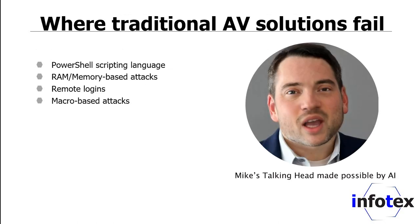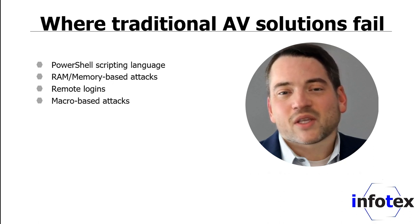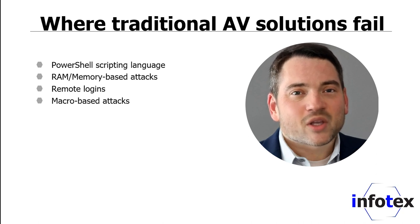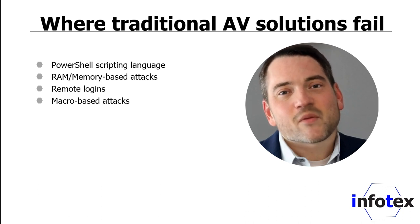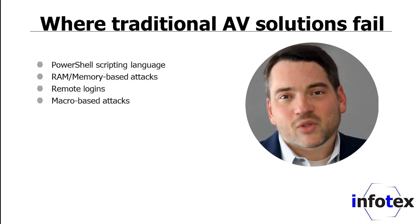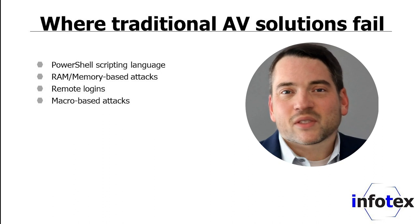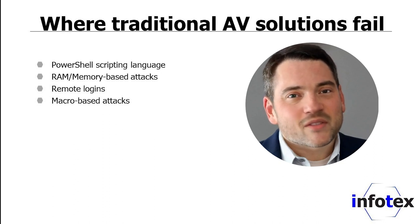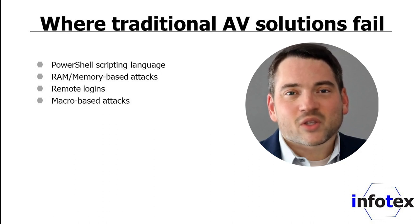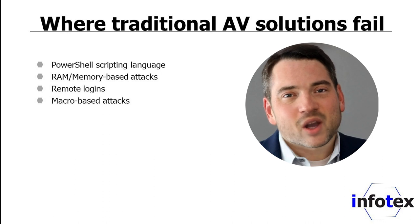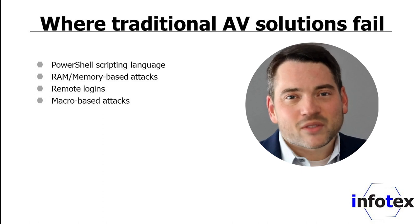Today's attackers know exactly where to find gaps and weaknesses in an organization's network perimeter security, and they penetrate these in ways that easily bypass traditional antivirus software. These attackers use highly developed tools to target vulnerabilities that leverage PowerShell scripting language, RAM memory-based attacks, remote logins, and macro-based attacks. Modern threats that do not introduce new files to the system often go undetected because traditional antivirus focuses on signature, file, or definition-based threats. And that's where endpoint detection is different.